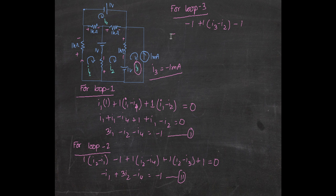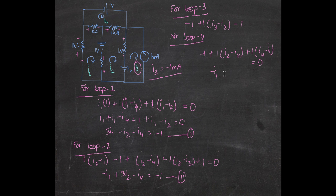For loop 4, computing it in the clockwise direction, we have: minus 1 volt plus 1·(I2 minus I4) plus 1·(I4 minus I1) equals 0. After simplifying, we get: minus I1 minus I2 plus 2·I4 equals 1. This is equation number 3.